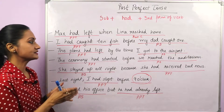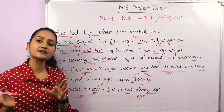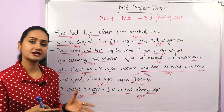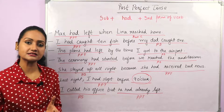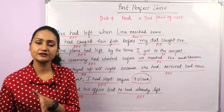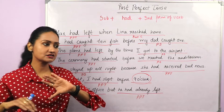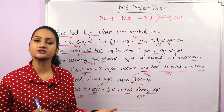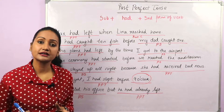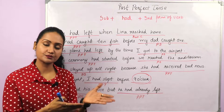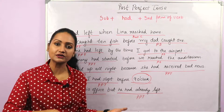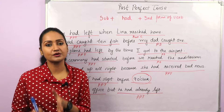To use past perfect tense, just find a past action within past. If there is one action that happened in the past and ends there, that is simple past. But if an action happened in the past and before that another action had already happened, that is past perfect.